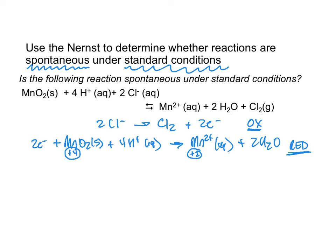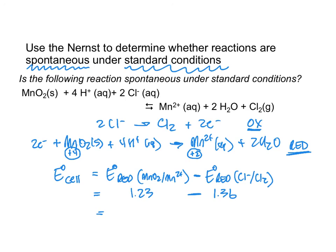Notice, I don't need to do a Nernst equation here. I'm just trying to figure out, is this reaction going to be spontaneous under standard conditions? So what I really want to find is my E° of my cell. And it'll be E° of whatever's being reduced minus E° of what's being oxidized. When I look in the table, I see the reduction for this couple is 1.23. When I look at the reduction for the Cl, I see 1.36. And I come up with a negative 0.13 volts.